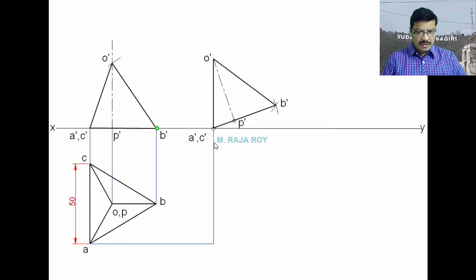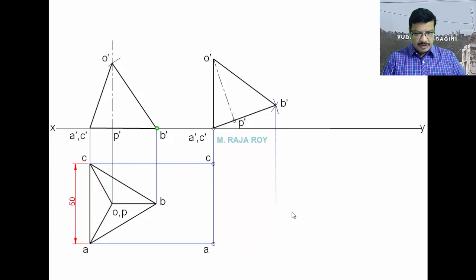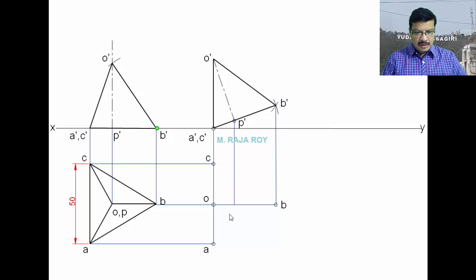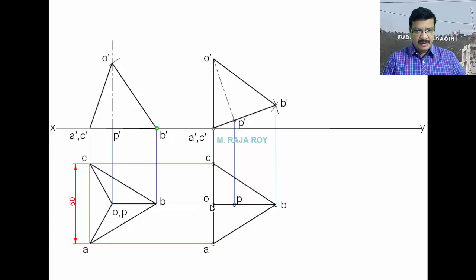This is the projector of A-dash and C-dash, and this is the locus of A — here we will get A, and here we will get C. Now join all these — this is the top view. When the face is vertical, the top view will look like this, and the apex is shifted to this particular point.